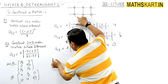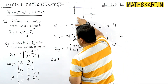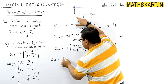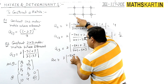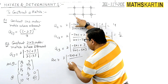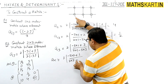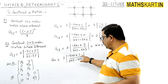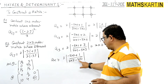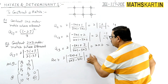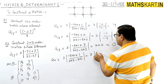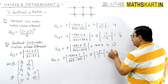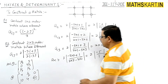Now the second row. A21: put i=2, j=1: 2 times of (minus 3×2 plus 1) divided by (2×2 minus 3×1). Solving: 2 × (−6+1) / (4−3) = 2 × (−5) / 1 = −10. Taking modulus gives positive 10. So A21 = 10.